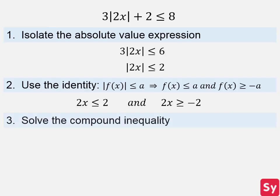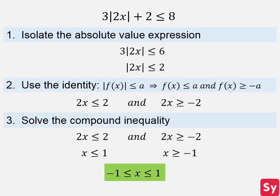Finally, we solve the compound inequality. We first solve 2x is less than or equal to 2: we divide both sides by 2 and get x is less than or equal to 1. Now we solve 2x is greater than or equal to negative 2: we divide both sides by 2 and get x is greater than or equal to negative 1. Now we combine the inequalities and get negative 1 is less than or equal to x, which is less than or equal to 1.